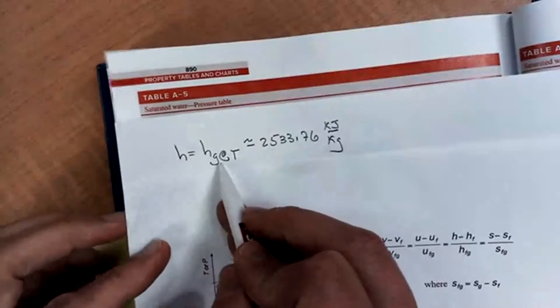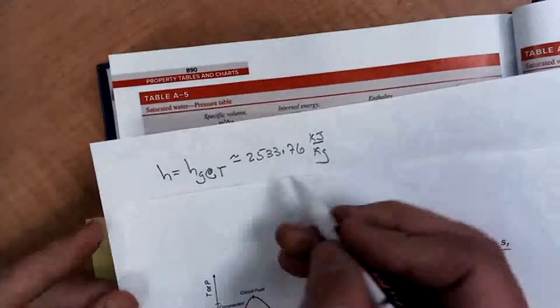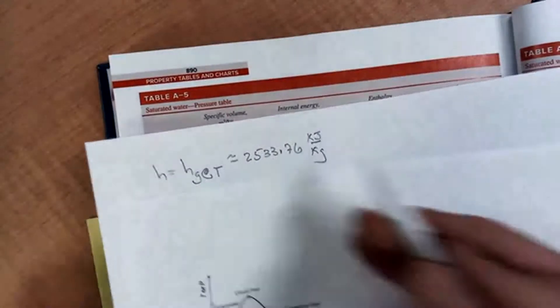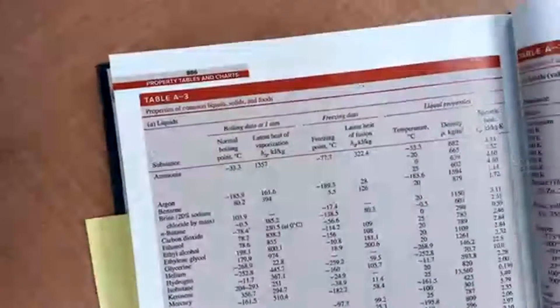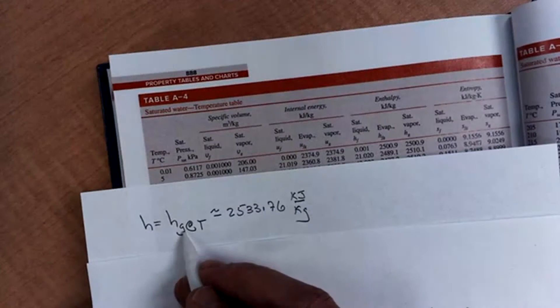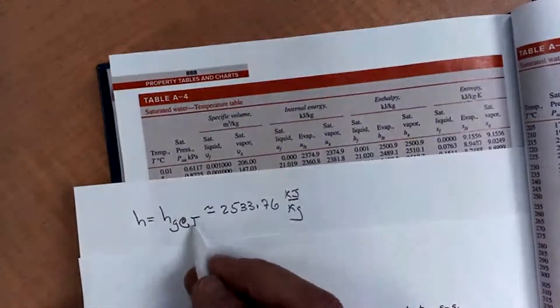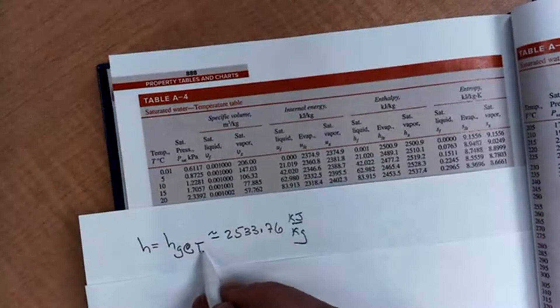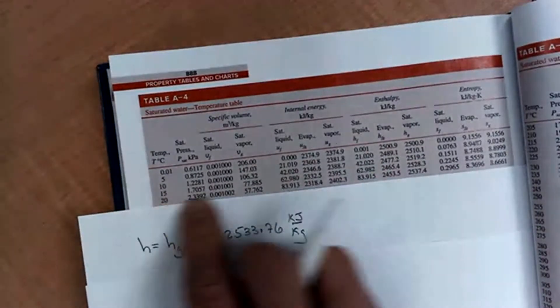H is equal to hg at T. So I've already written down here that it's 2533, I'll show you how I got that. We're going to come back and we're going to estimate h to be the saturated vapor enthalpy at the temperature 18 degrees. When I go to the temperature, I don't see a temperature of 18 degrees.